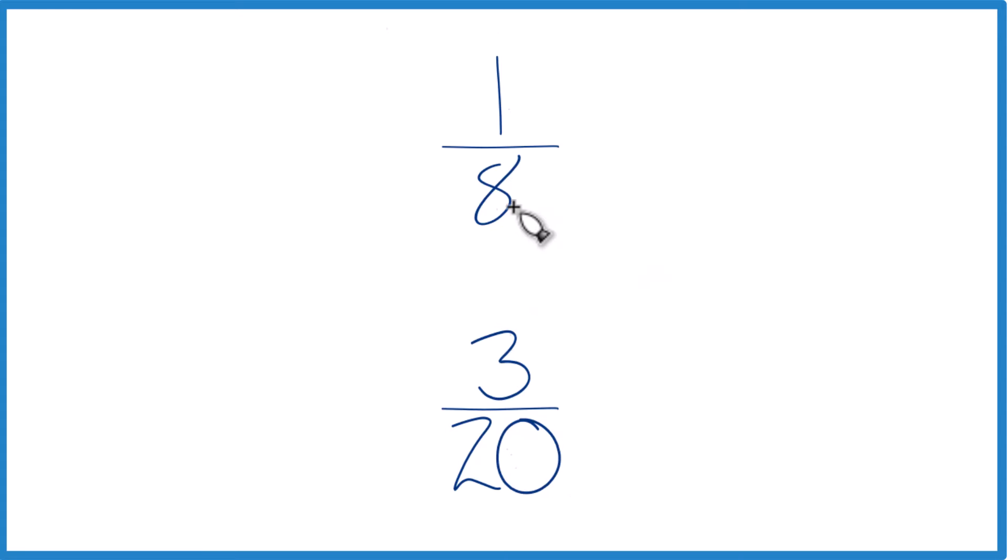You could divide 1 by 8 on a calculator, 3 by 20 on a calculator, get the decimals and compare. That'd tell you if 1 eighth is greater than, less than, or equal to 3 20ths.